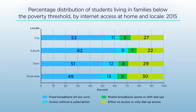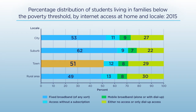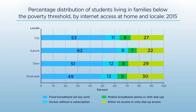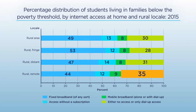If we focus only on students below the poverty level, the percentage with fixed broadband access at home was highest for students in suburban areas, followed by students in cities, then students in towns, and was lowest for students in rural areas. The percentage of low-income students with no access or only dial-up ranges from 22% in the suburbs to 30% in rural areas. And in remote rural areas, 35% of low-income students had no internet access or only dial-up.